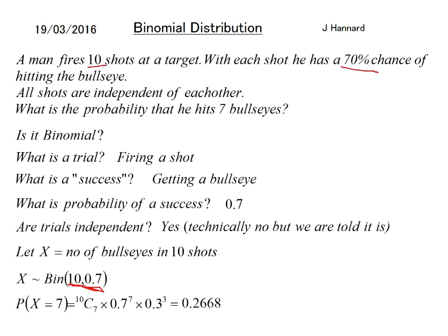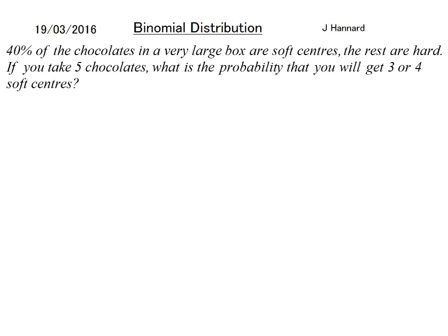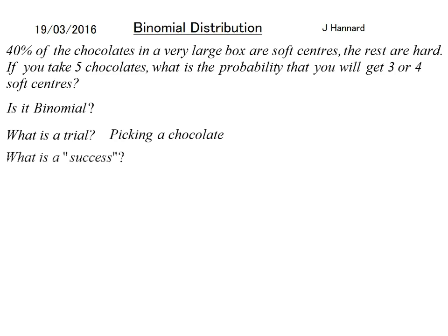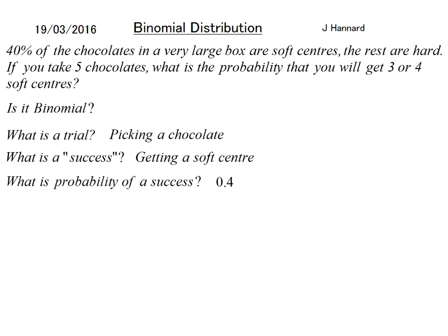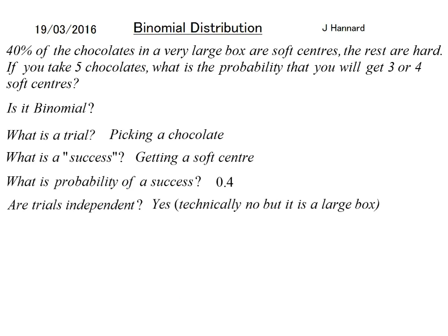Let's do one more to cement the knowledge. 40% of chocolates in a very large box are soft centres. A trial here is picking a chocolate. Success is picking a soft centre — probability 0.4. Are the trials independent? Technically no, but the box is very large, so picking one chocolate doesn't meaningfully change the probability for the next. Let X equal the number of soft centres in a handful of five chocolates, so X ~ B(5, 0.4).